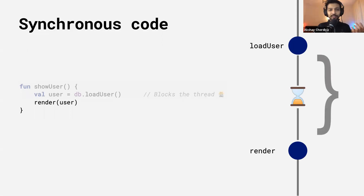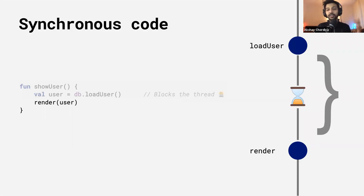Once the data is loaded from the database, the render function is called, which renders the user's data on the UI. There are multiple ways to tackle this — you could use RxJava or async task, which is now deprecated, but you would use something like that.